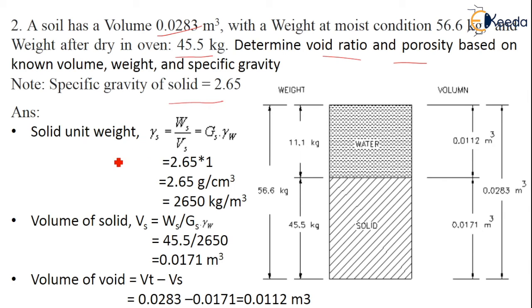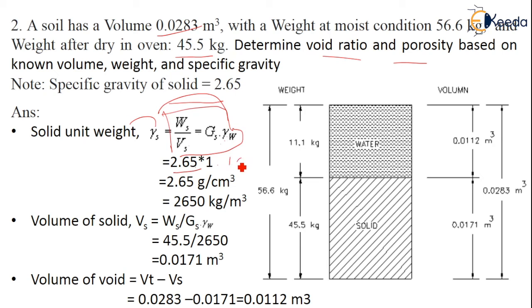We know that the unit weight of solids, gamma_s, equals Ws/Vs, which equals Gs into gamma_w. We can calculate gamma_s as Gs into gamma_w. Gs is 2.65 and gamma_w is 1 g/cm³. So gamma_s equals 2.65 g/cm³. Converting to kg: since 1 kg equals 1000 grams and 1 m equals 100 cm, after substituting all relations we get 2650 kg/m³.